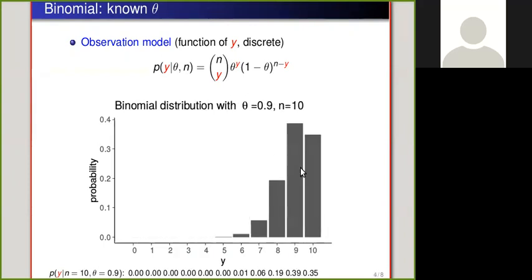We can also look at another distribution with just changing theta to 0.9, and these probabilities for different y values change, but again these sum to 1.